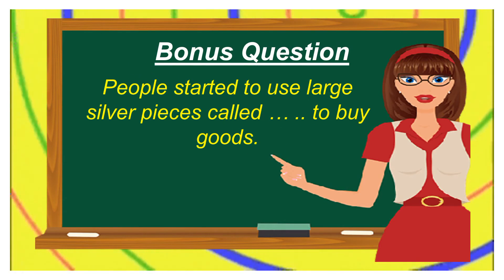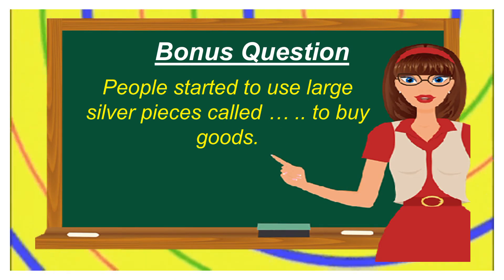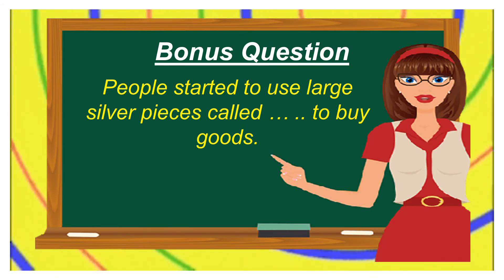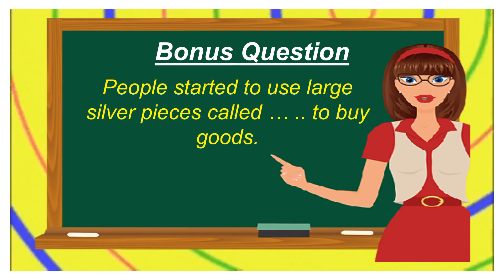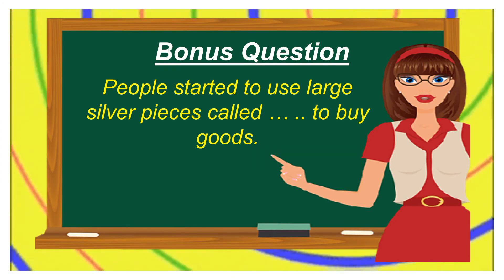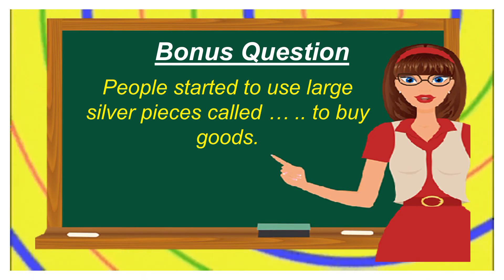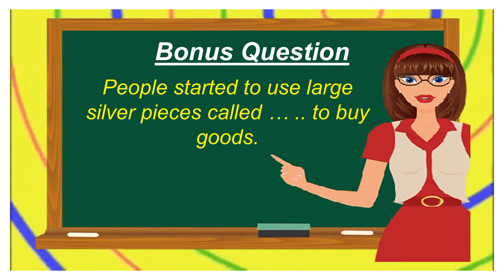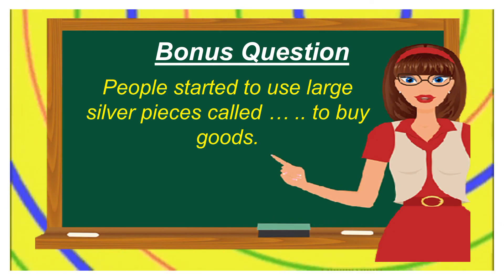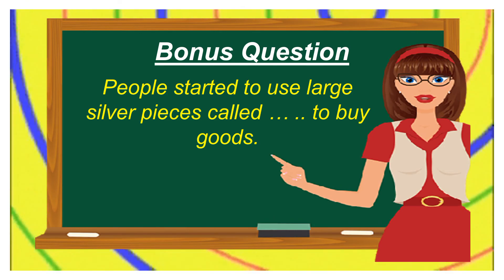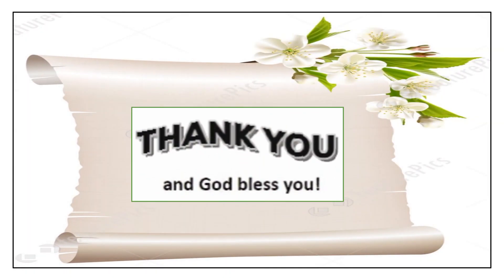Your today's bonus question is: 'People started to use large silver pieces called ______ to buy goods.' I know you are all shouting because you know the answer — give your correct answer in the form. Thank you, have a nice day. God bless you, my little champs.